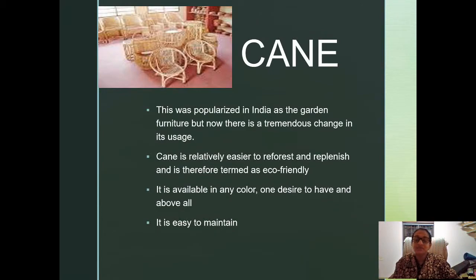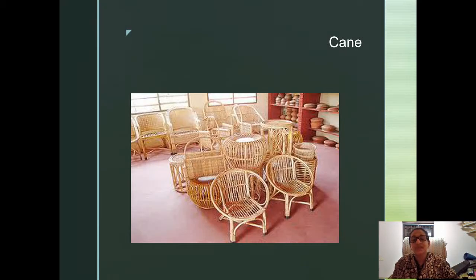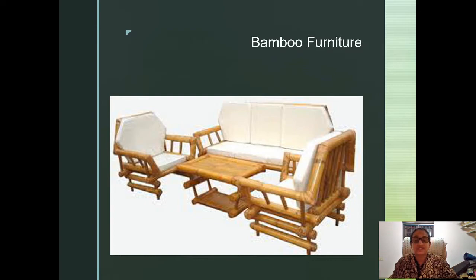Cane has been present in Kerala for maybe centuries. Those rudimentary designs have given way to much more sophisticated designs nowadays. It is considered cheaper, but when a lot of labor goes into it and the processing is really laborious, cane is also becoming more and more expensive and durable. You can see the traditional type of cane furniture which is comparatively economical. Bamboo is a very fast-growing grass and is considered a highly eco-friendly material worldwide. It has resilience, and hence it is also used in construction. You can convert it into furniture pieces.